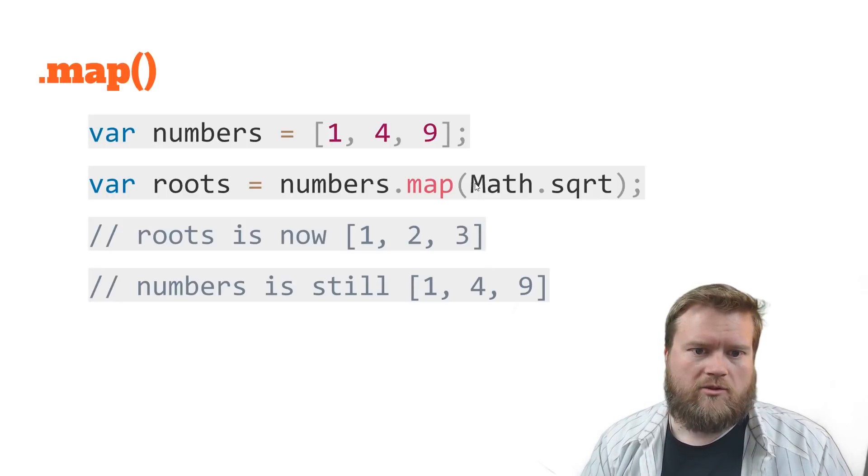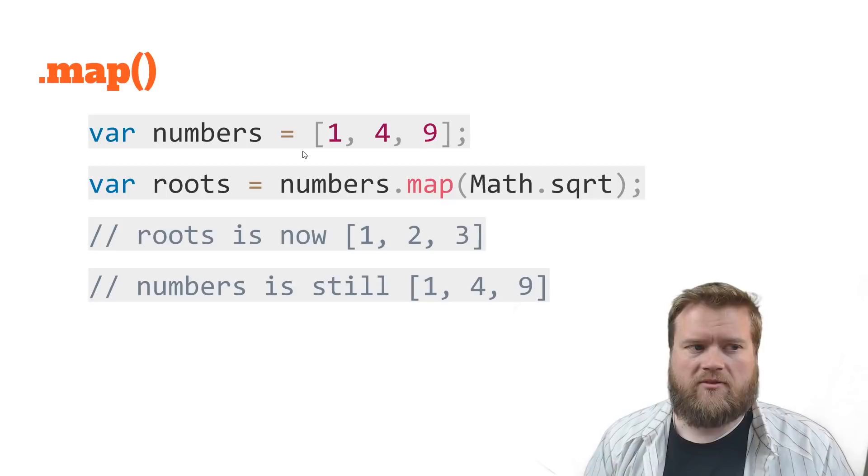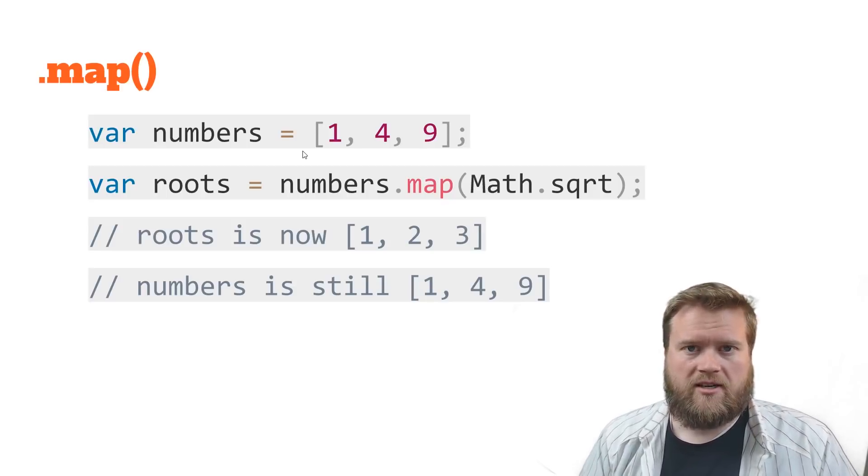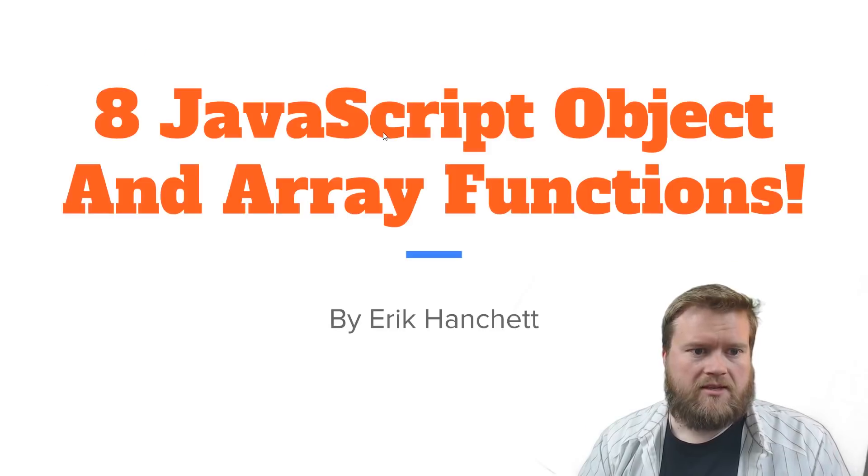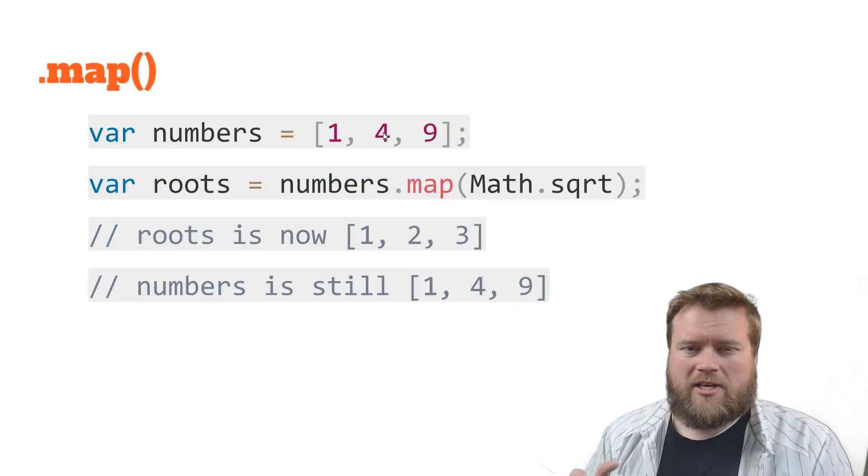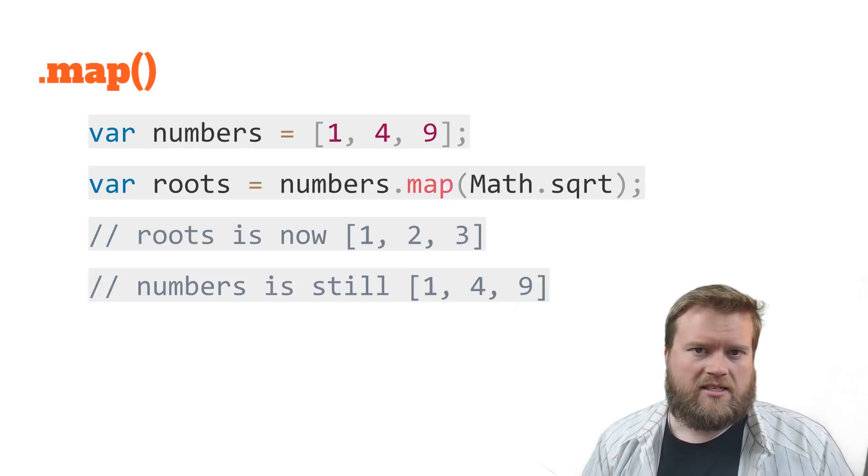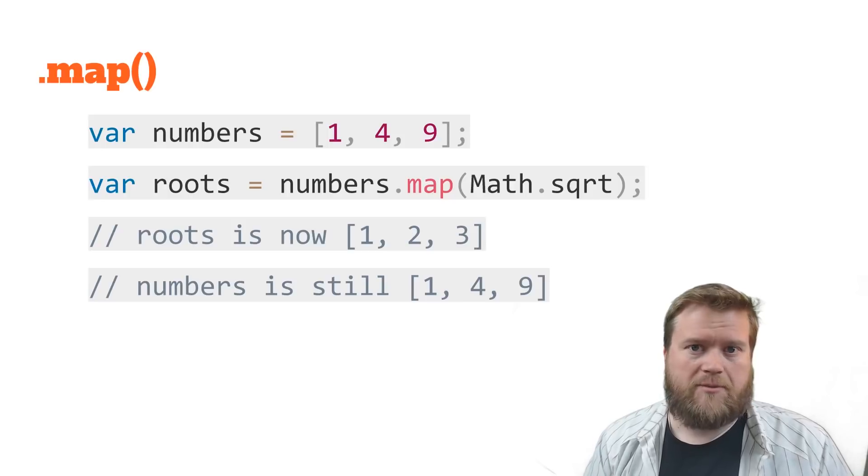So we're changing the value somehow. We're either returning the same value back or we're changing it. So we're not adding or deleting anything out of the array. We're actually updating it. In this case, we're running this math.square root on it.